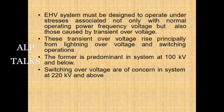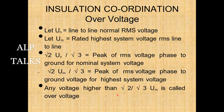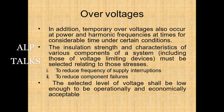In insulation coordination, Un is line-to-line normal RMS voltage and Um is the highest system voltage line-to-line. The peak ground voltage is √2/√3 × Um. Any voltage higher than this peak value is called an overvoltage. Temporary overvoltages also occur at power and harmonic frequencies for considerable time under certain conditions.